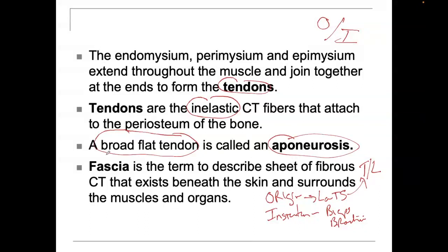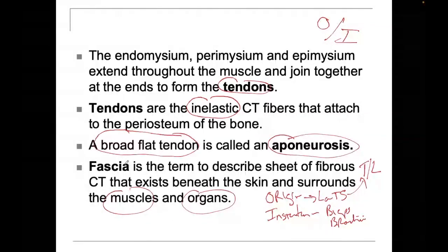Fascia is a term that describes the sheet of fibrous connective tissue that exists beneath the skin and surrounds everything — it surrounds the muscle, organs, blood vessels, and nerves. If you've ever eaten a piece of chicken, like a drumstick, you can peel the skin off and see the meat — the meat is the muscle. Superficial to the muscle, you can often see a clear, translucent sheath that you can peel off — that's called fascia.